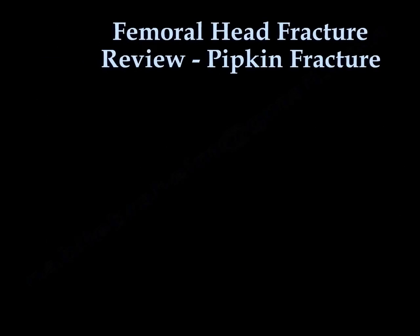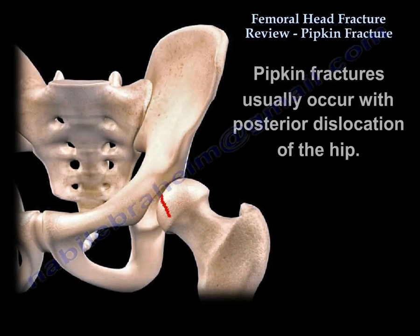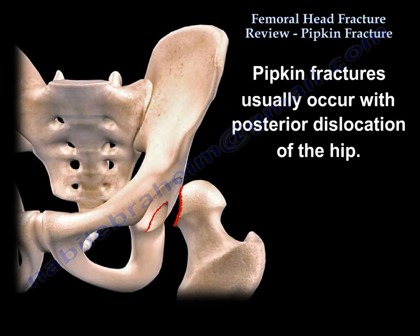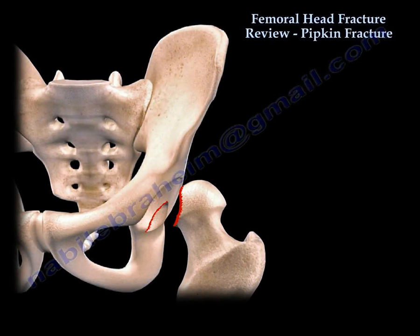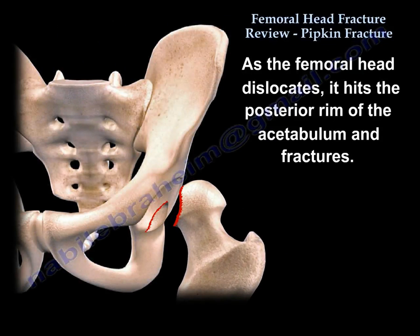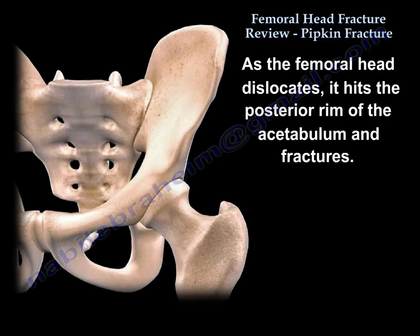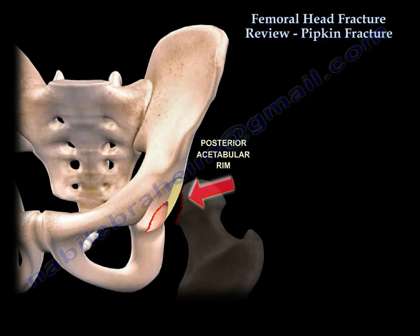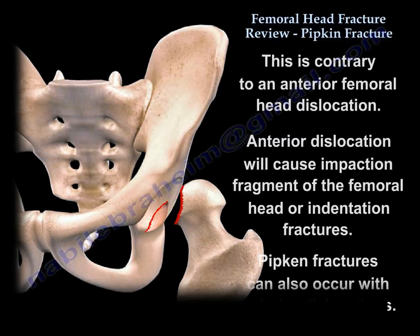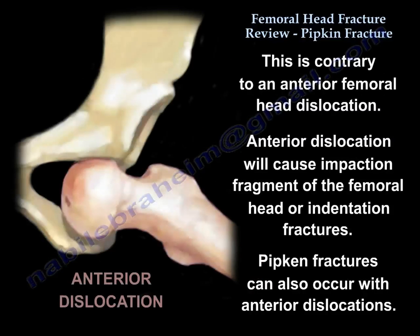Femoral Head Fracture Review — Pipkin Fractures. Pipkin fractures usually occur with posterior hip dislocation, happening in about 10% of posterior hip dislocations. As the femoral head dislocates, it hits the posterior rim of the acetabulum and fractures. This is contrary to anterior hip dislocation, which produces impaction or indentation fractures of the head.